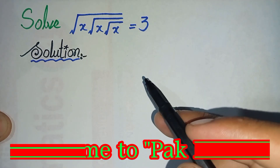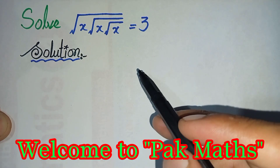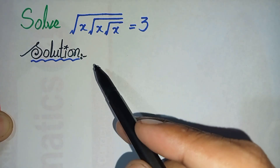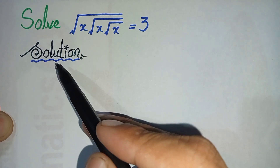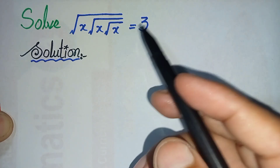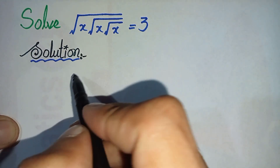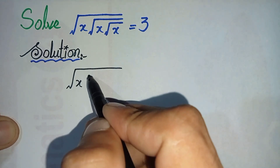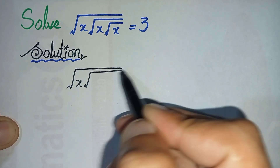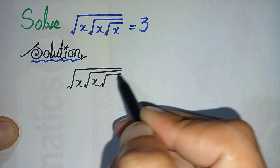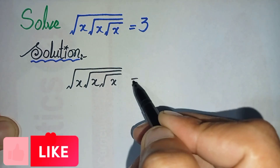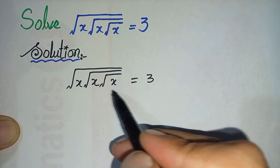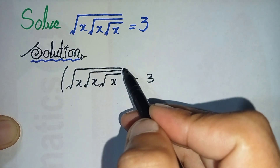Hello everyone, welcome back. In this video I'm going to solve this nice square root problem. We will write the solution and rewrite the question. The question is: square root of x times square root of x times square root of x is equal to 3. First of all, we will square both sides.